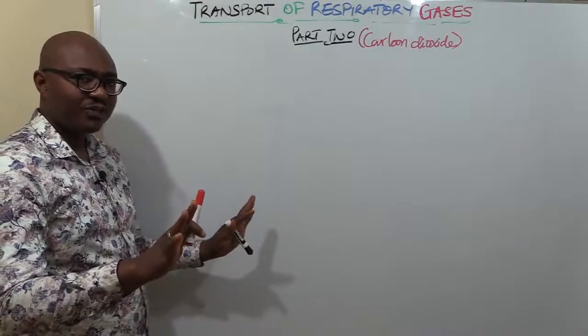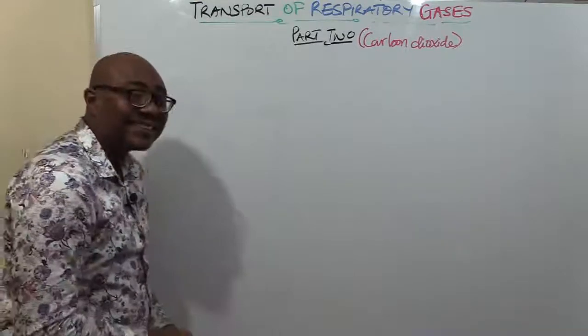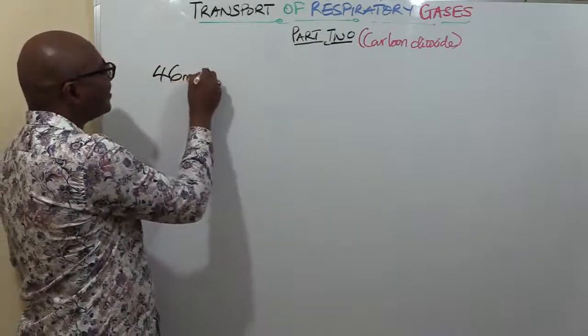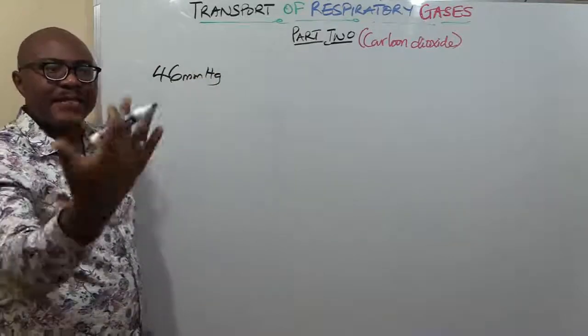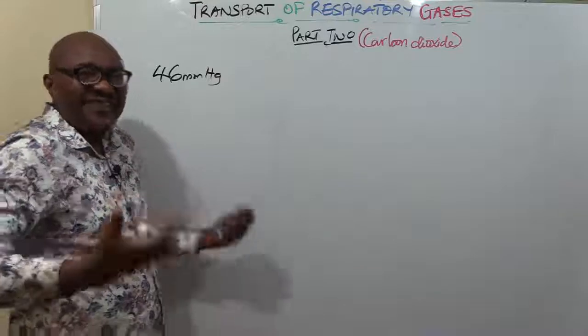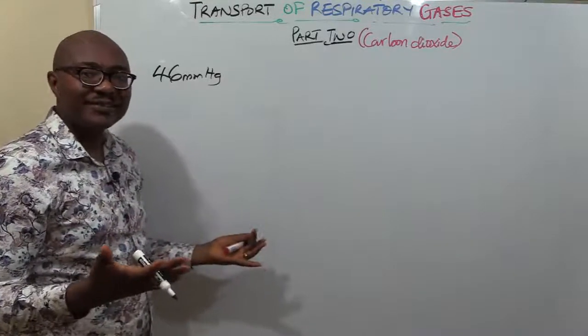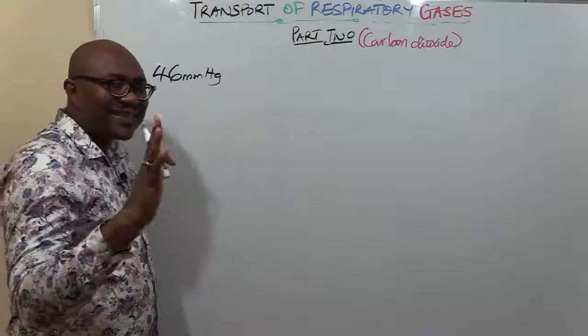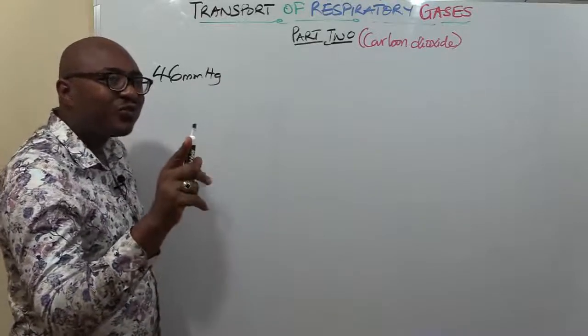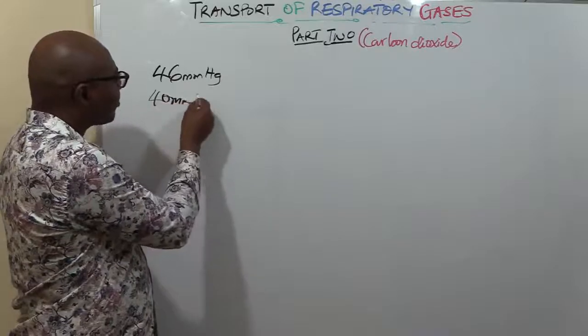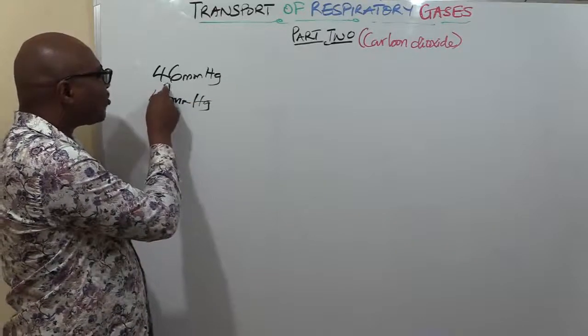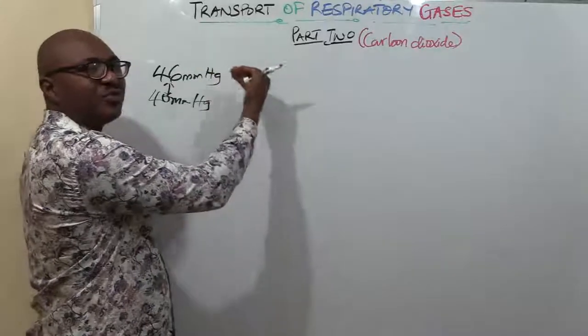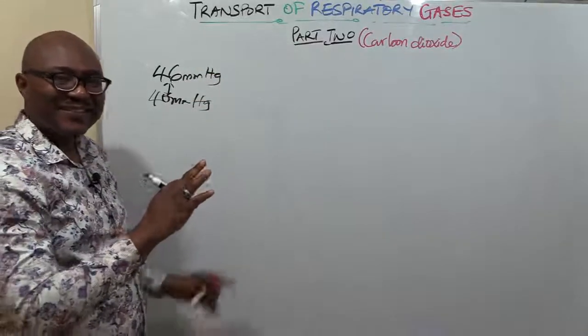The partial pressure of CO2 at the tissues is very high - it's at 46 millimeters of mercury. The arterial blood supplying those tissues is carrying oxygenated blood, and it also has carbon dioxide, but the arterial blood has just 40 millimeters of mercury. So there's a pressure gradient of six.